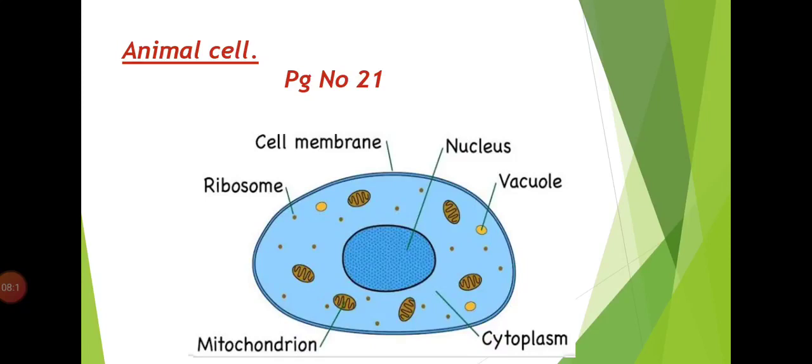Now animal cell structure jo hai, woh different hai. There are plants, plants are also living things, so plant cells or animal cells mein kuch different things hai. So in this unit we learn about the animal cells. And animal cells look like this.